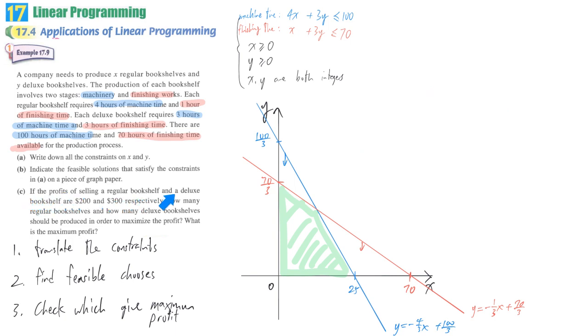And part C, they give more information about the profit. They say that the profit of selling a regular bookshelf is $200 and the profit of selling a deluxe bookshelf is $300. So the total profit is equal to 200 times the number of regular bookshelves plus 300 times the number of deluxe bookshelves. This is the total profit function. And how can we find out which point will give us the maximum profit? The maximum profit will only appear at the corner, that means the vertices. First point, second point, third point, and fourth point.